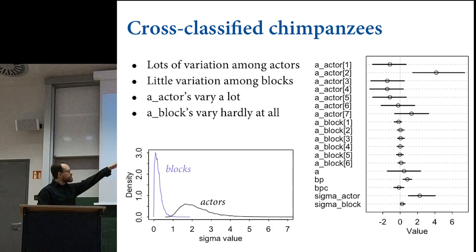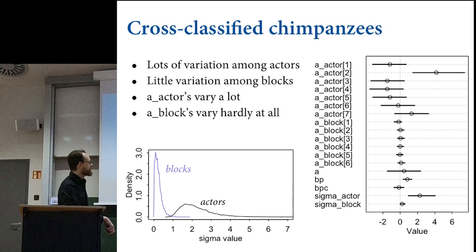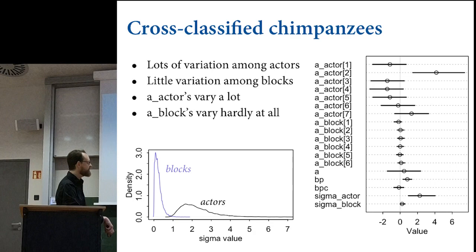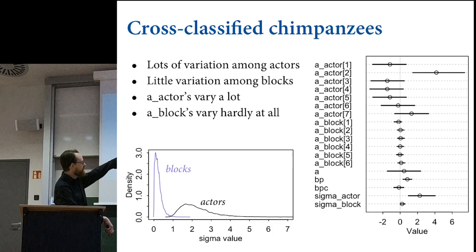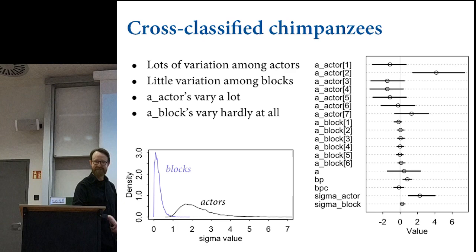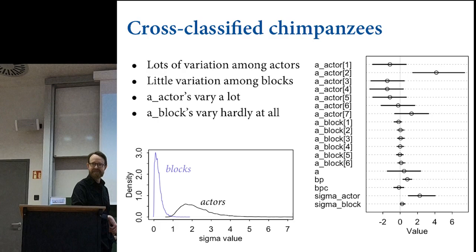Here's what happens. On the right is a forest plot or dot-line plot of the marginal posterior distributions of each dimension. All the actor effects are up top—seven actors, seven intercepts. These are offsets from the grand mean alpha, zero-centered. There's one individual with a very high value above zero, meaning that individual is left-handed. Larger values mean more likely to pull the left lever. That individual always pulled the left lever—not a single trial in which actor two did not pull the left. Very committed.